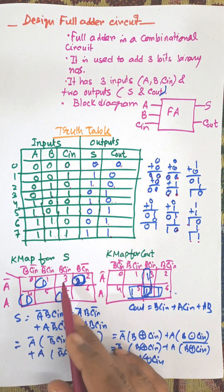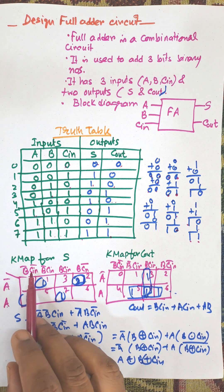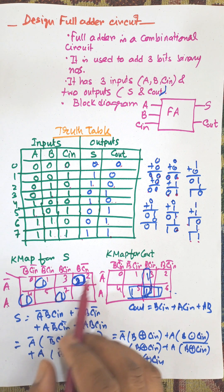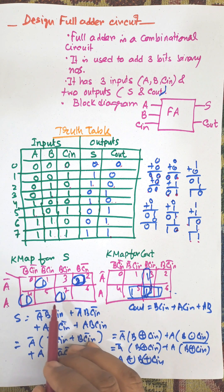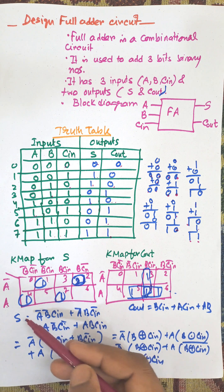Now the K-map for the sum. There are 3 variables, so this is the structure for K-map. A bar A, B bar C in bar, B bar C in, B C in, B C in bar. Cells 0, 1, 2, 3, 4, 5, 6, 7. And there are 1s at positions 1, 2, 4, and 7.